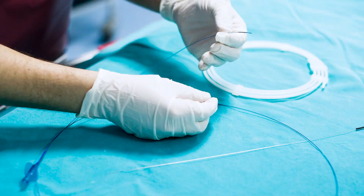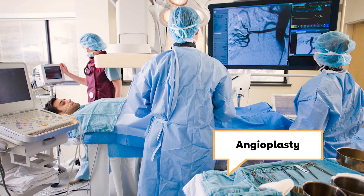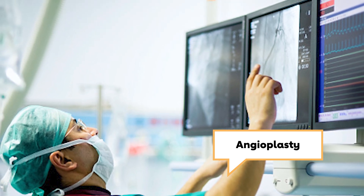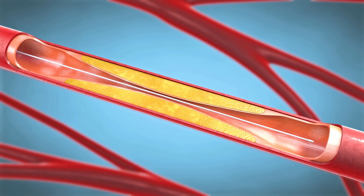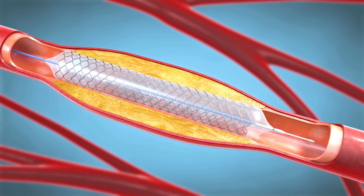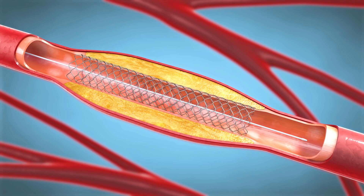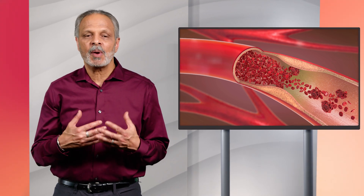For some people with PAD, lifestyle changes and medications aren't enough. In those cases, minimally invasive treatment or surgery may be needed. Angioplasty or stent placement, often used to treat coronary artery disease, can also treat PAD. The surgeon makes a small incision and inserts a catheter to reach the blocked artery. A tiny balloon is inflated inside the artery to open the clog, and a tiny wire mesh cylinder called a stent may be inserted to help hold the artery open. A medicine or special device can also be delivered through the catheter to remove a clot.